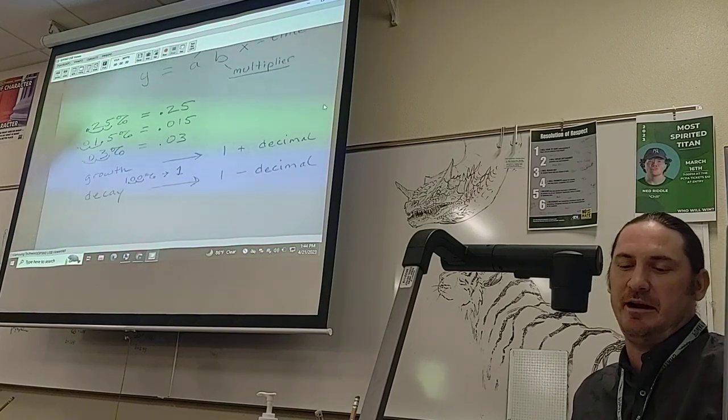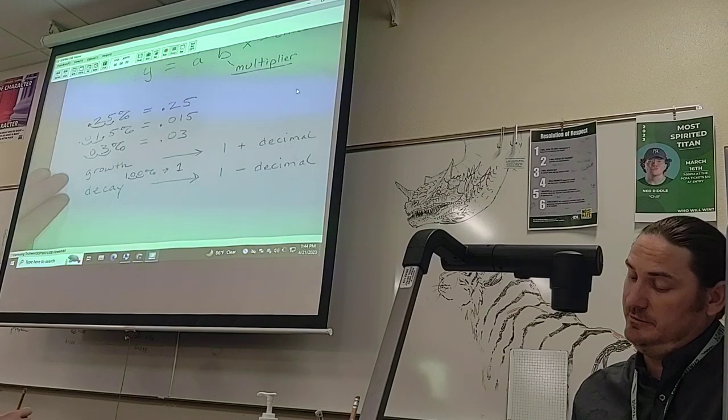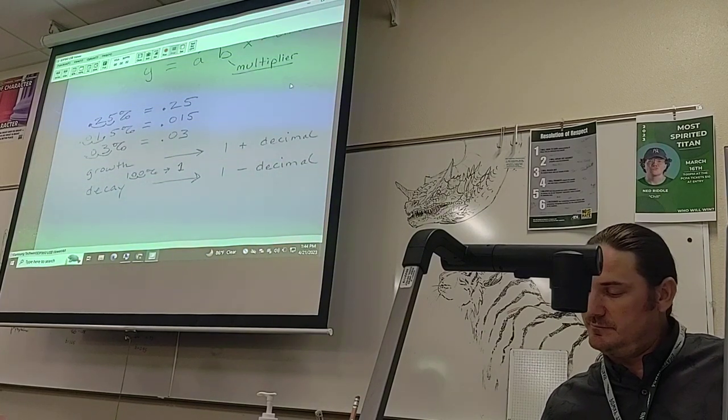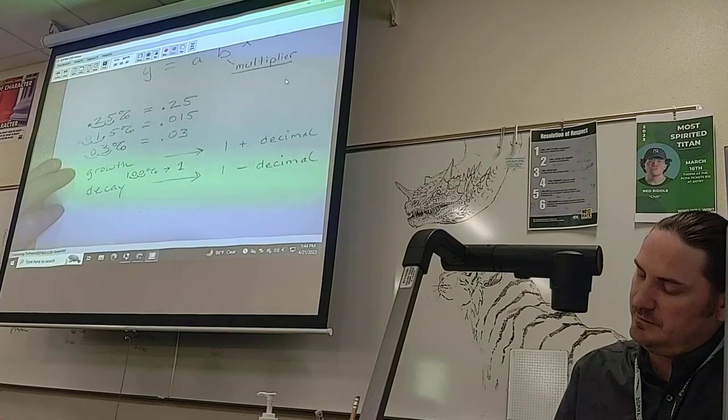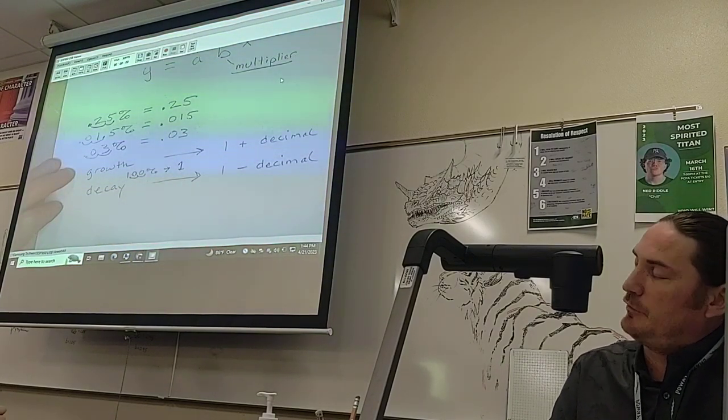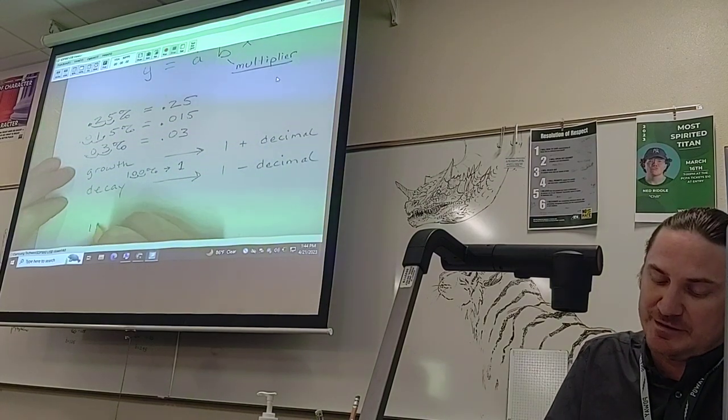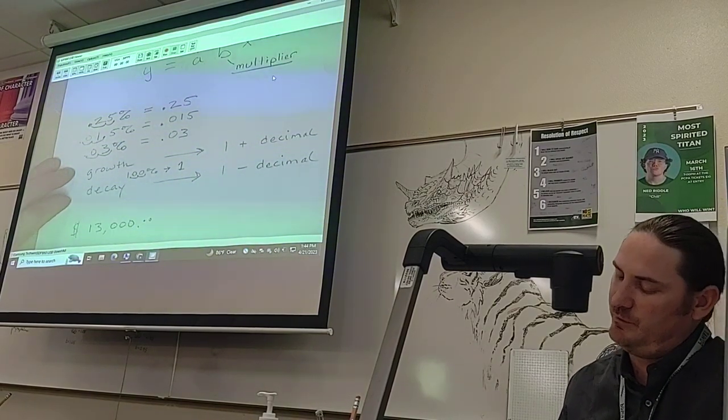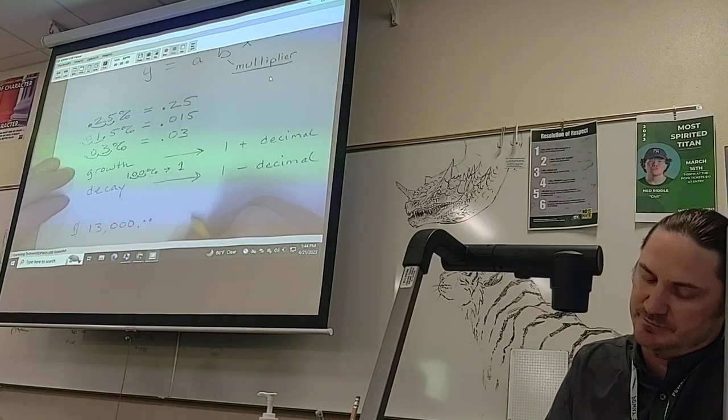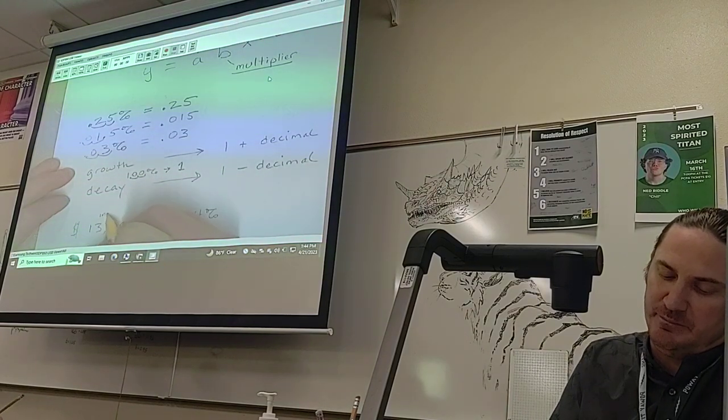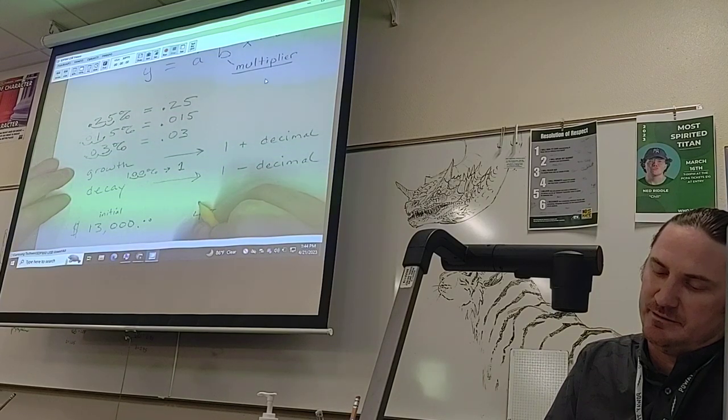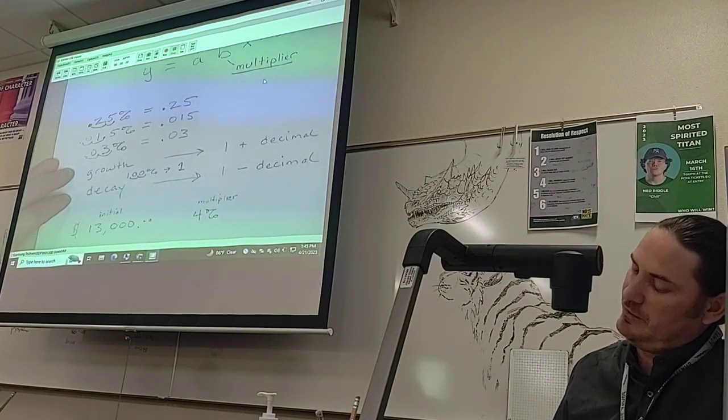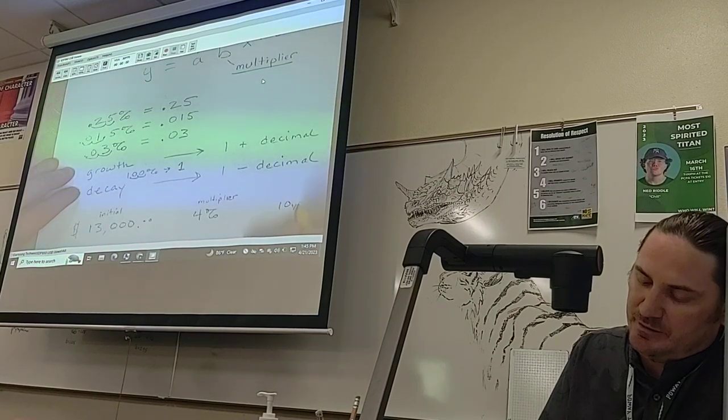Let's put it into practice and do a real problem. If Bill purchased a motorcycle for $13,000, we know we're going to use that number. It will depreciate by 4% each year. So we have our initial amount, we have our multiplier. And how much will the motorcycle be worth in 10 years? Now we have our time.